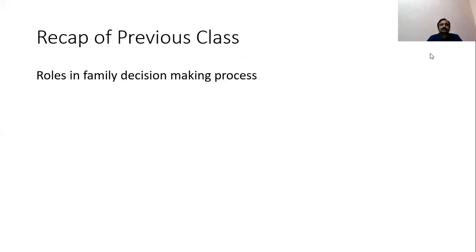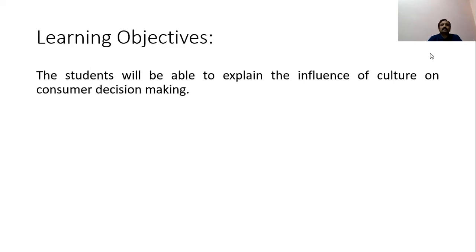In the previous video lecture session number 25, we discussed about roles in family decision making process, where we learned about various roles such as initiators, influencers, deciders, buyers, preparers, users, maintainers, and disposers — and how these various roles are played by family members in the process of decision making. The learning objective of this session is that students will be able to explain the influence of culture on consumer decision making process.